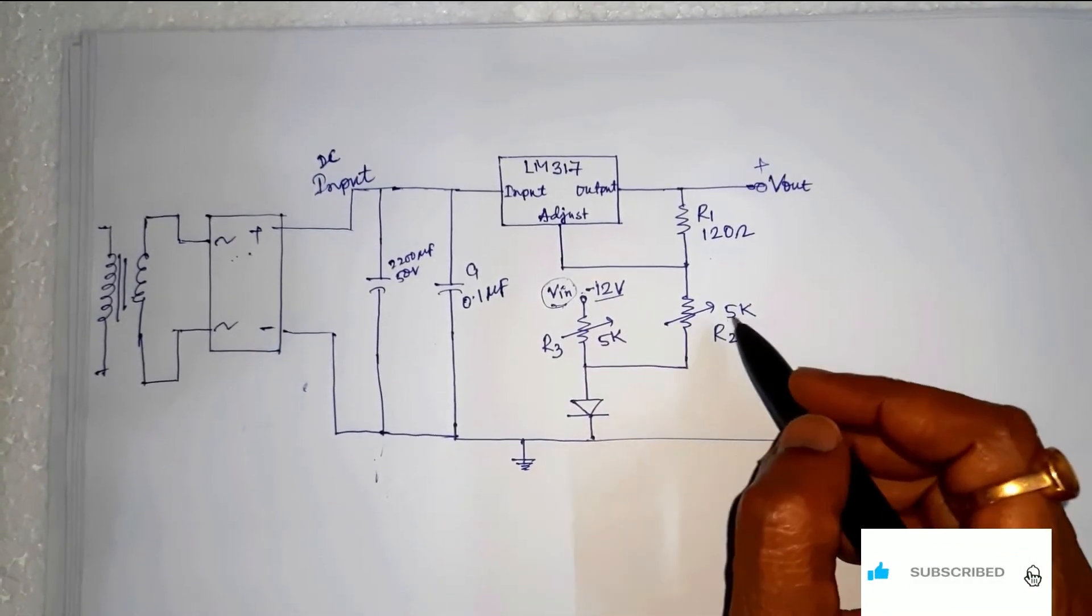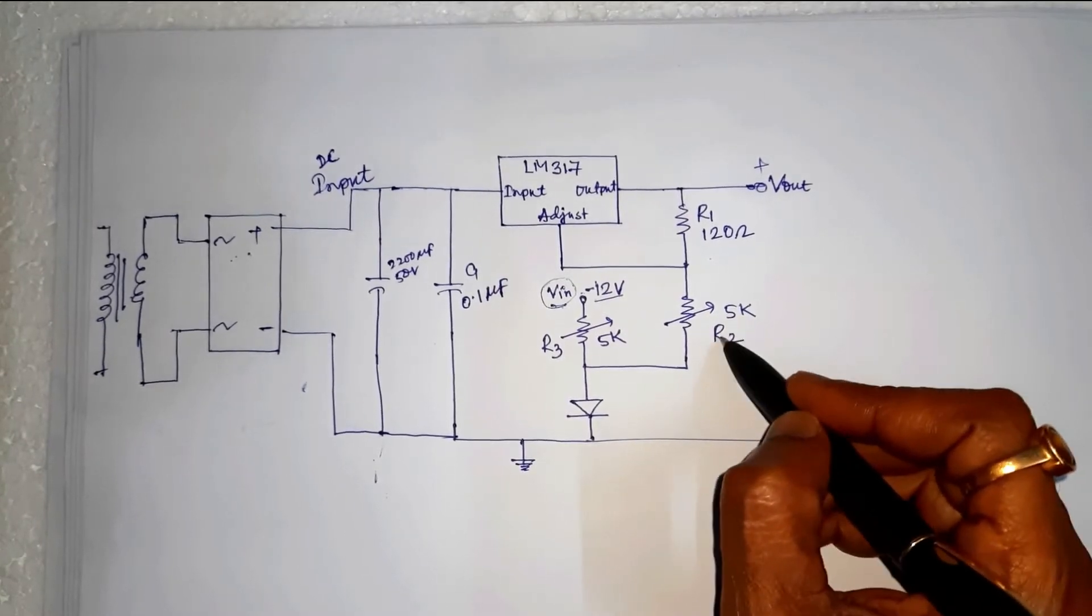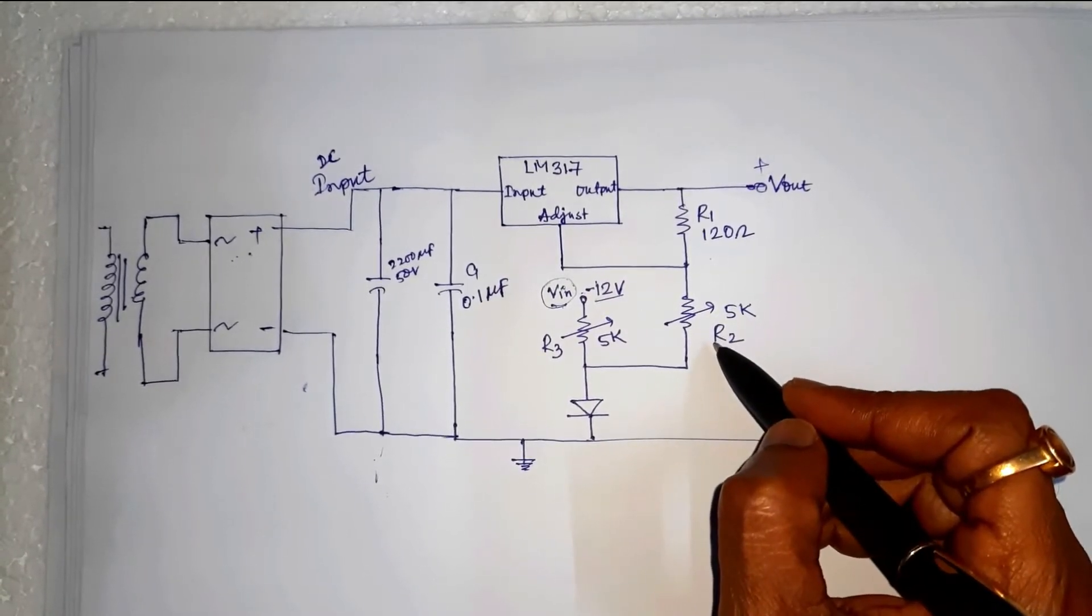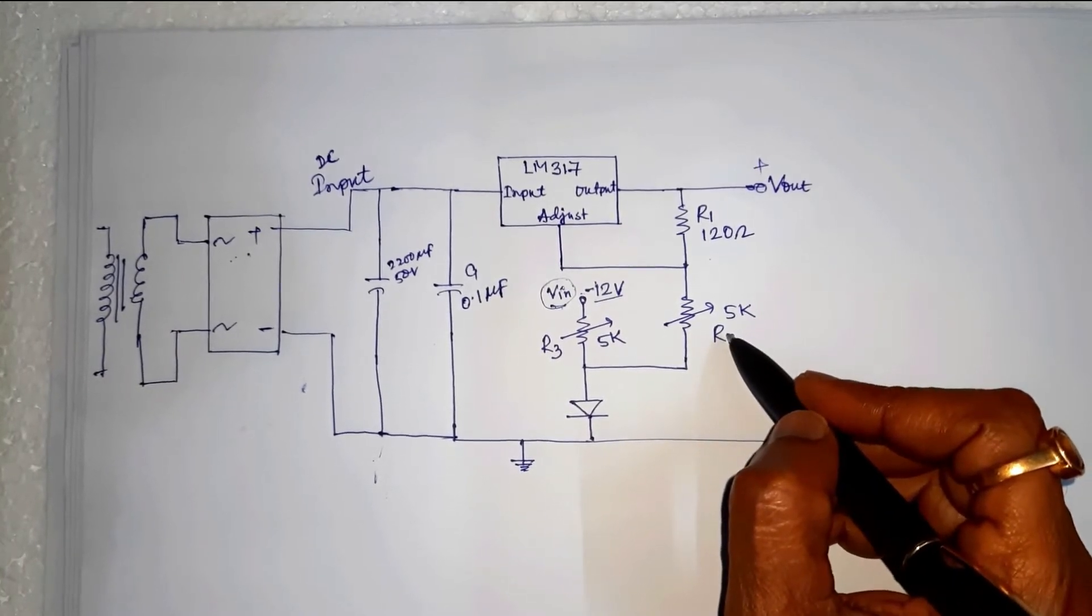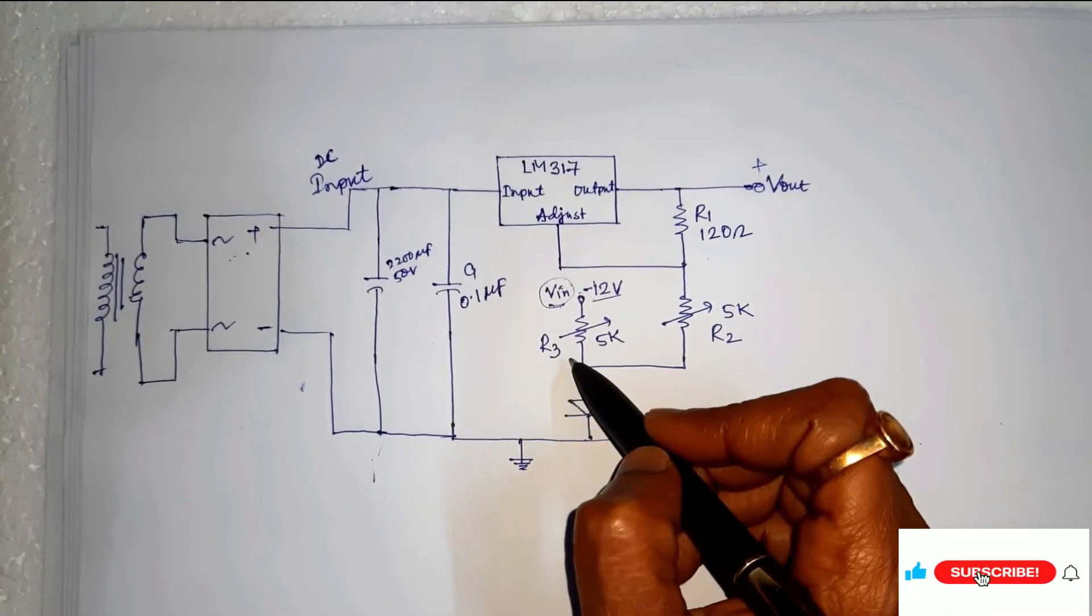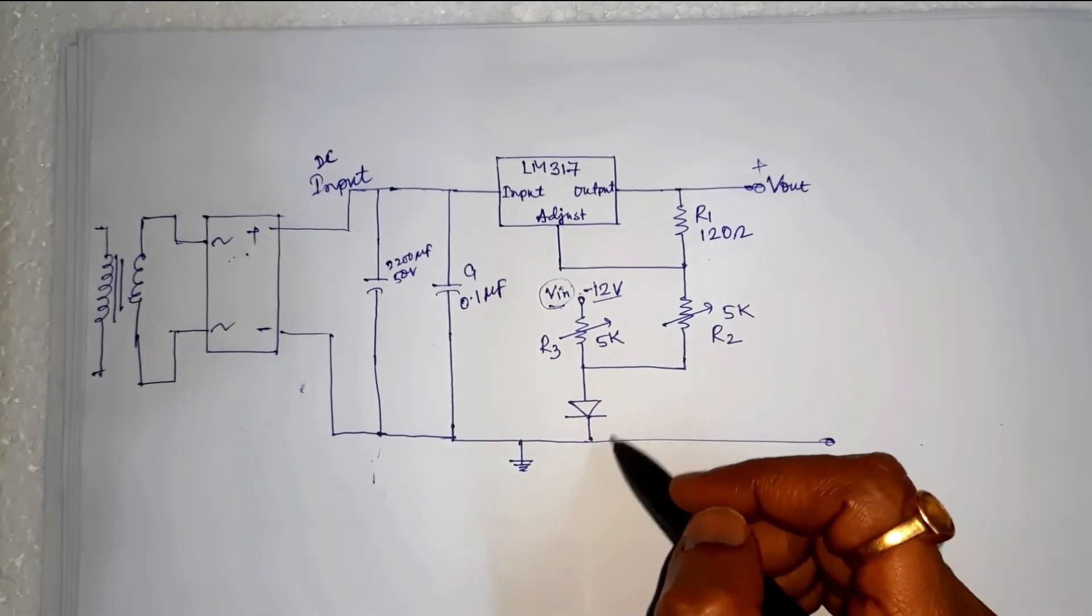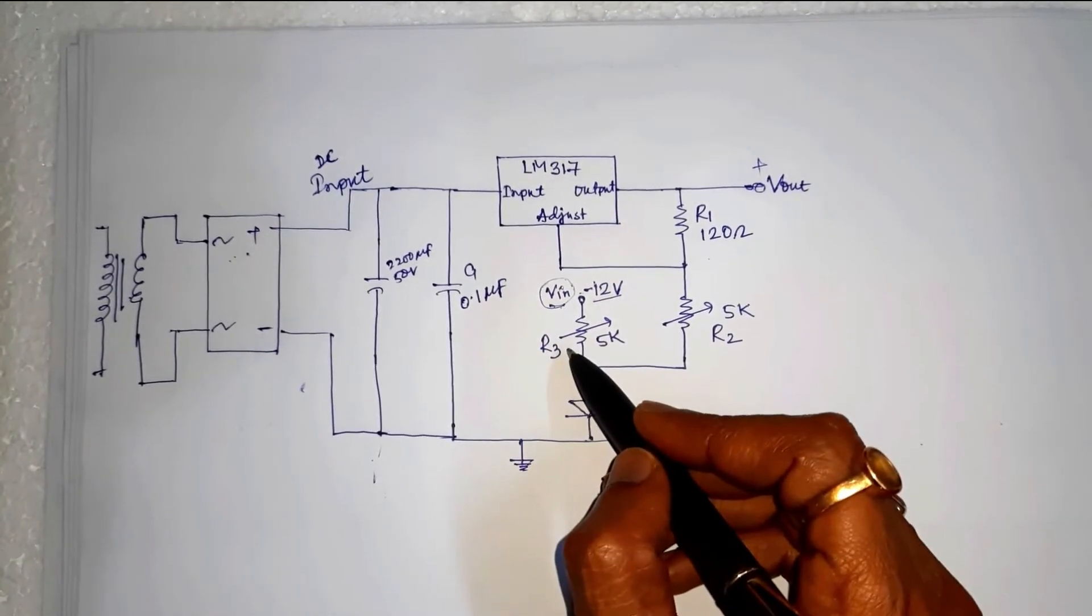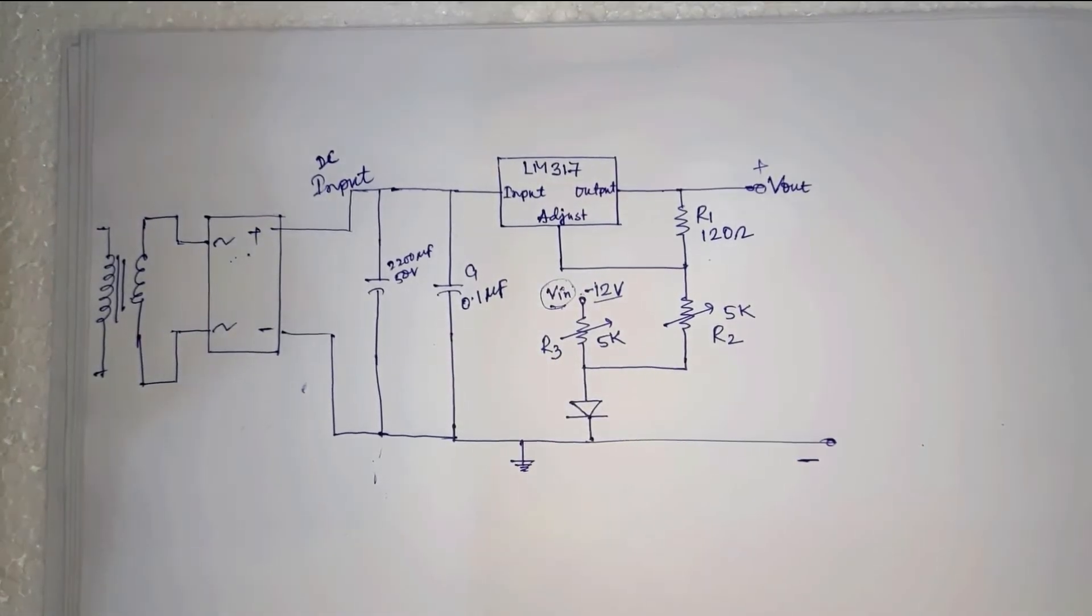If we can set R2 resistance at a minimum resistance value that is near to 0, then by adjusting R3, we can make V-reference voltage as 0, where R3 is a variable resistance.